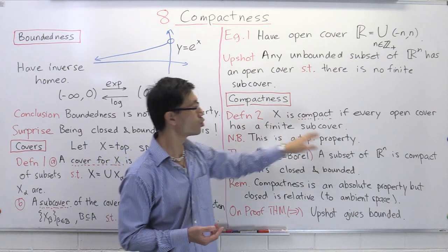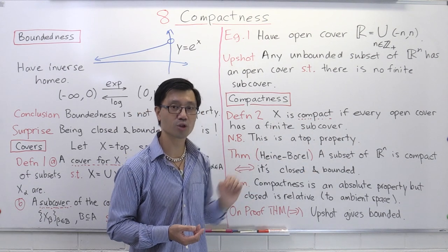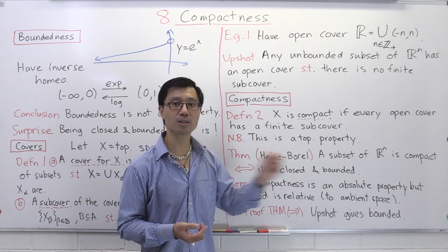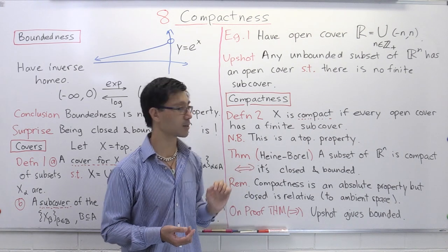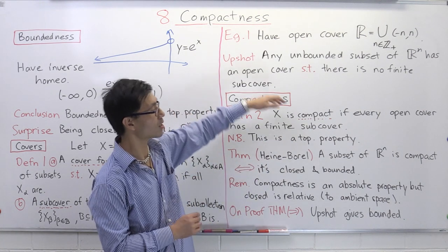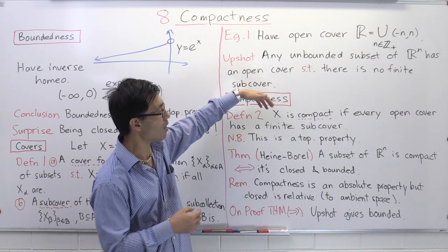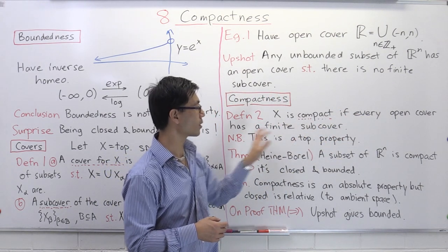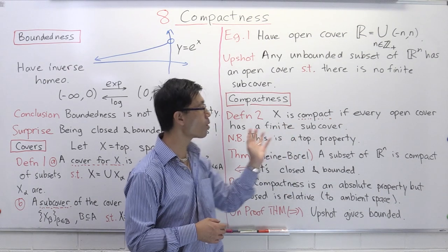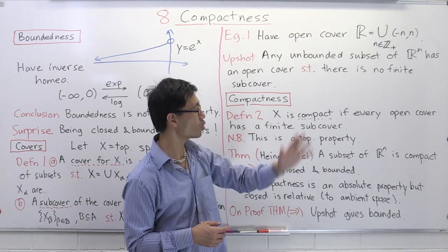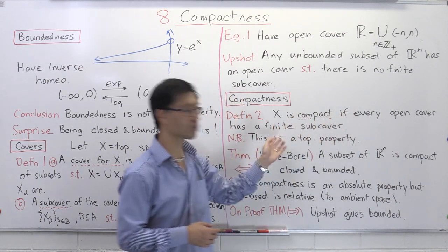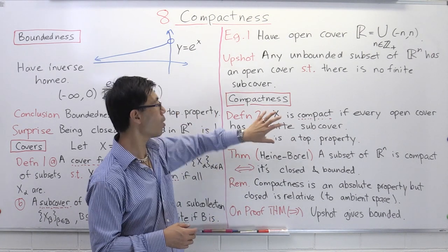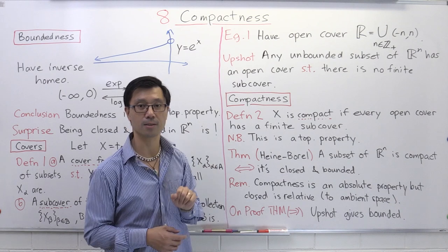In other words, if two topological spaces are homeomorphic, either they are both compact, or they are both not compact. It's quite easy to see why that's true: if X is compact and you have a homeomorphic space, that homeomorphism will allow you to show the condition also holds for the homeomorphic space as well.